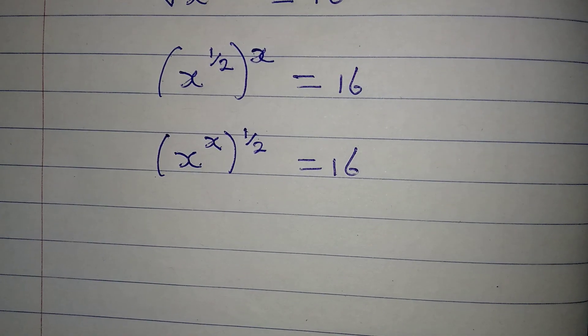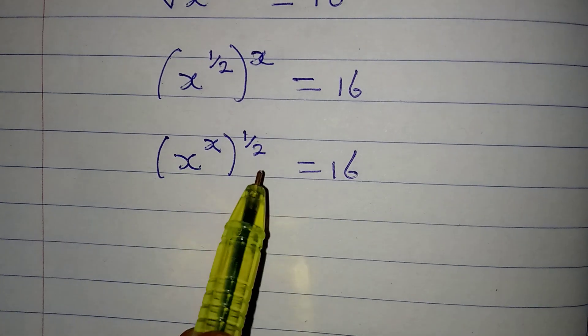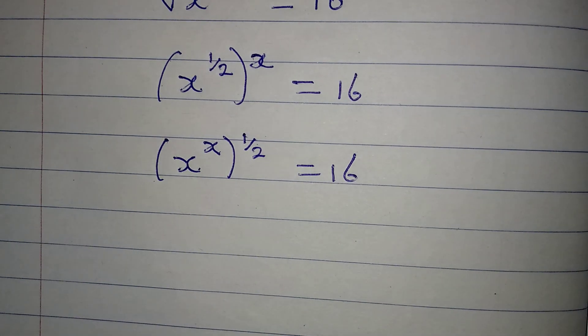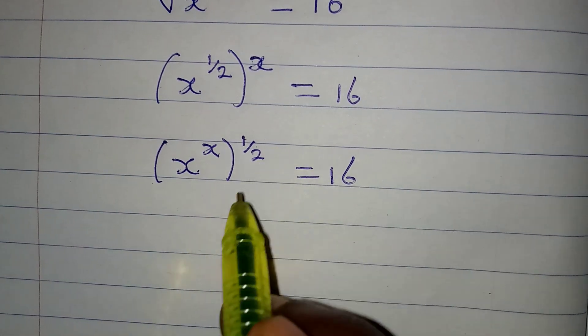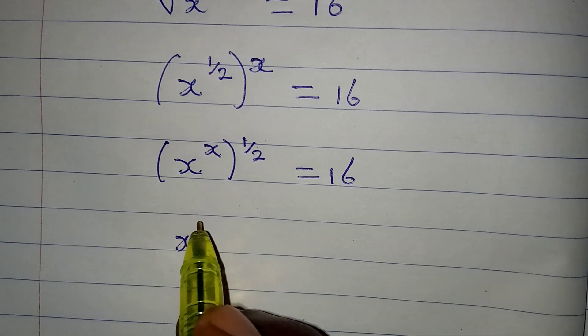Now the next step is for us to eliminate this from here. How do we eliminate this from here? Now this is what we will do to eliminate this: we are going to square everything.